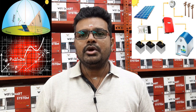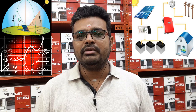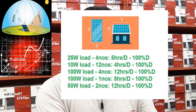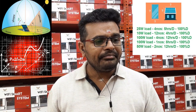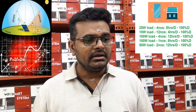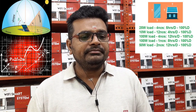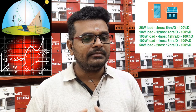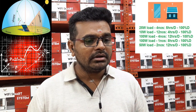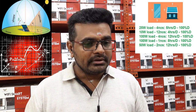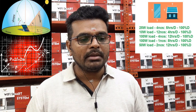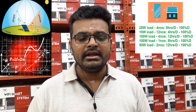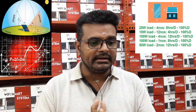If you have any doubts or concerns about the systems, you can approach Street Solar Life at gmail.com. Now, the loads we have considered are: 25-watt load, 4 units, running 5 hours per day; 10-watt load, 12 units, running 4 hours per day; 100-watt load, 4 units, running 12 hours per day; 100-watt load, 1 unit, running 8 hours per day; and 50-watt load, 2 units, running 12 hours per day. These are all loads running on 100-watt two-day cycles.